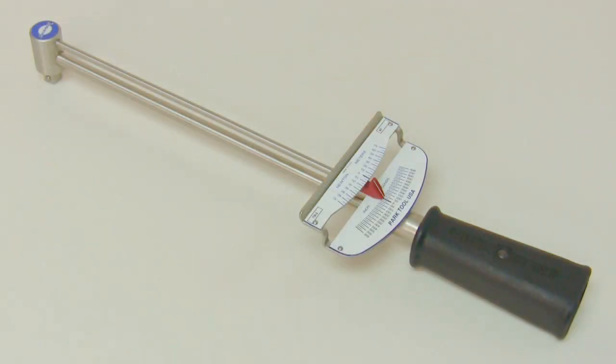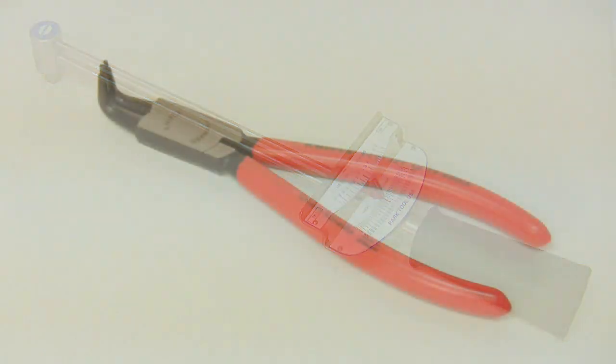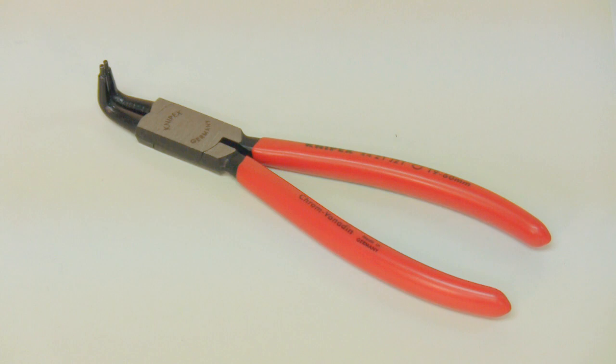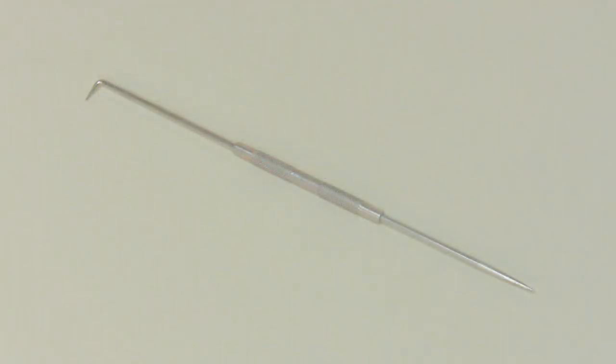You'll also need a torque wrench. Next is a pair of high quality snap ring pliers. You'll want to use a pair with larger diameter tips. Then you'll need a sharp pick with either a 90 degree or straight tip.